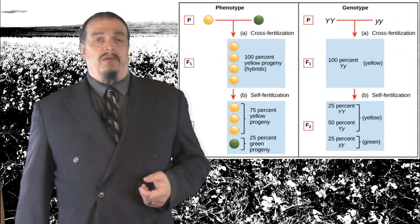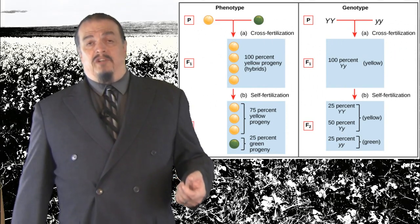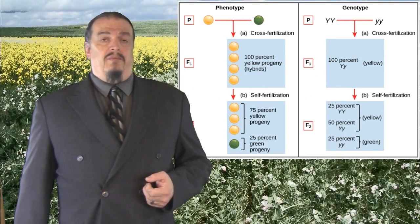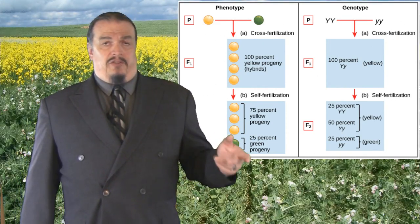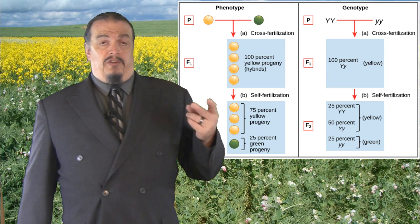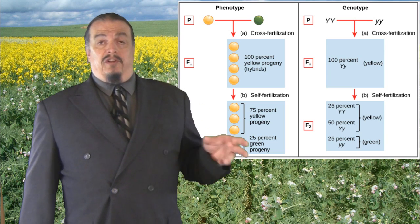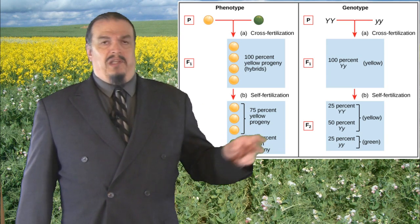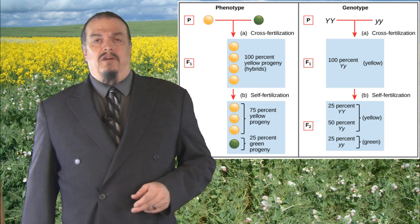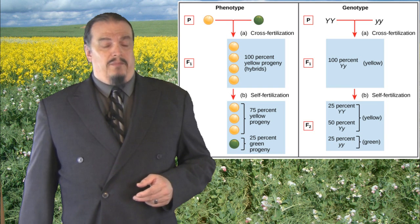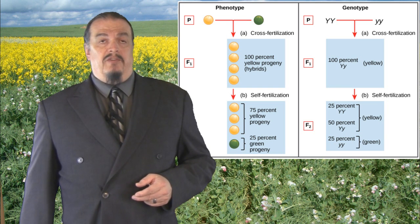The traits that Mendel experimented on were easy to isolate, predict, and study for that reason. To this day, traits that are located on only two alleles of a single gene where only one allele can completely dominate the other are called, fittingly enough, Mendelian traits.